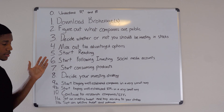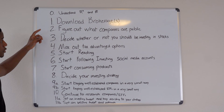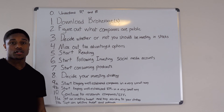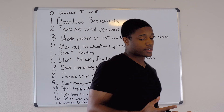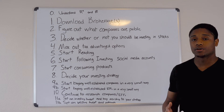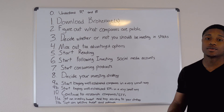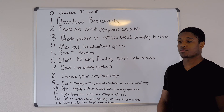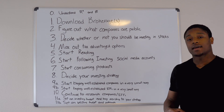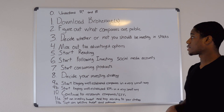Number two: figure out which companies are traded publicly. One way to do that is literally just drive around your neighborhood. Look around your house and figure out how many products you own that are publicly traded. Procter & Gamble, Coca-Cola, Costco, Amazon, Apple, Microsoft — start looking up those companies, find out their ticker symbols, and say, 'I like these products, I'm going to look further into the stock.'